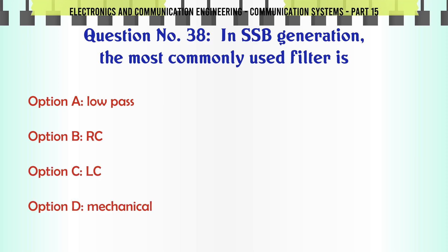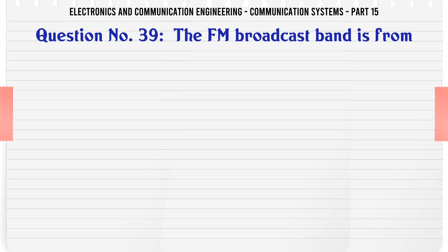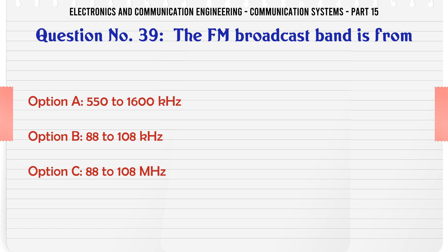In SSB generation the most commonly used filter is: A low pass, B RC, C LC, D mechanical. The correct answer is mechanical.